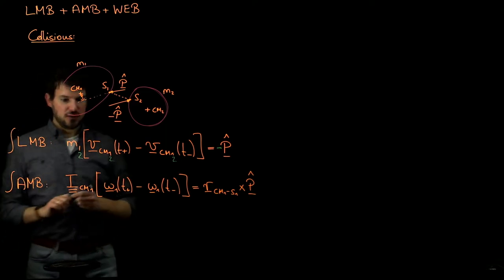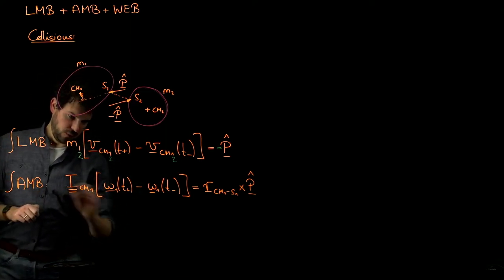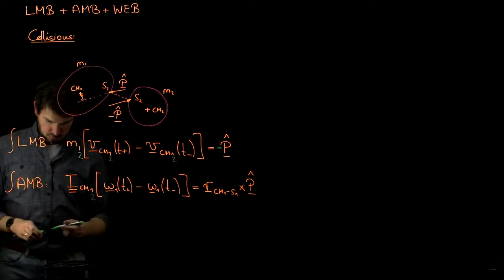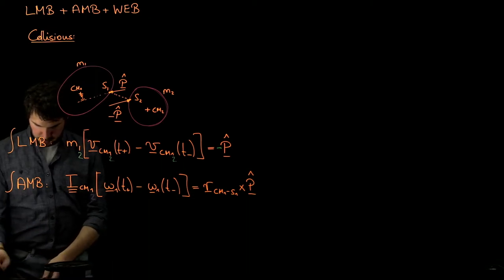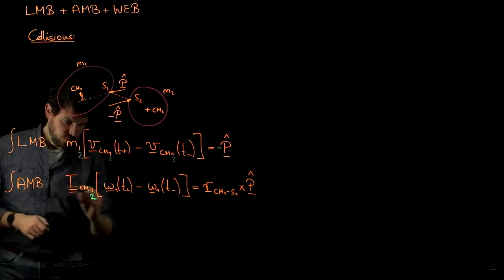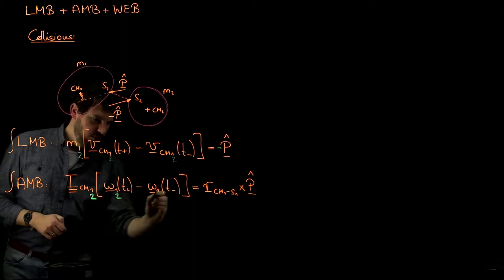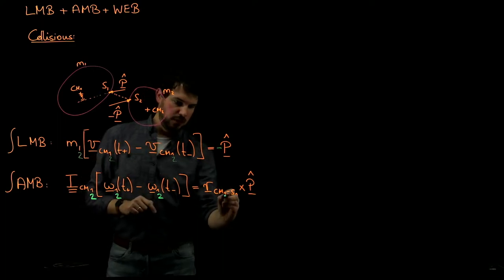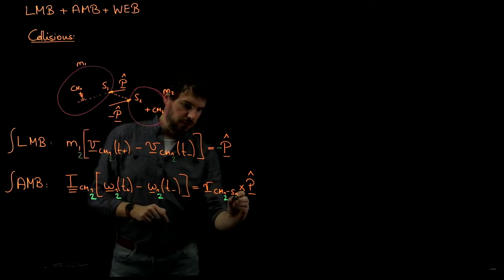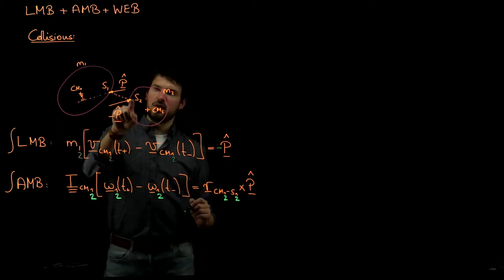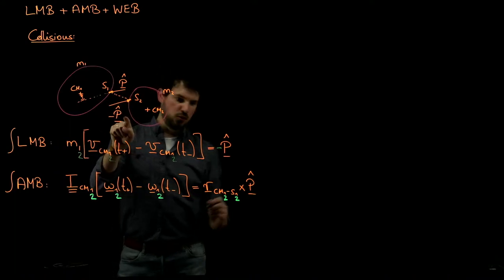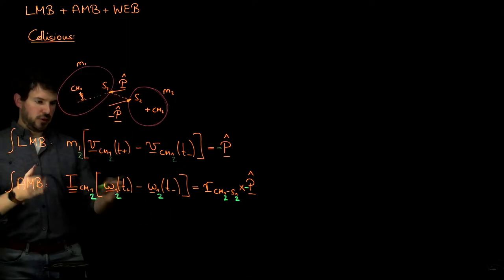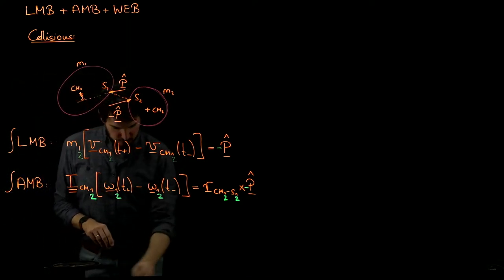We can do the same for body 2. In that case all subscripts become 2, and the main difference is that we go from the center of mass of body 2 to contact point S2, and instead of P̂ we experience the torque due to minus P̂. But we can write this down for body 1 or body 2.